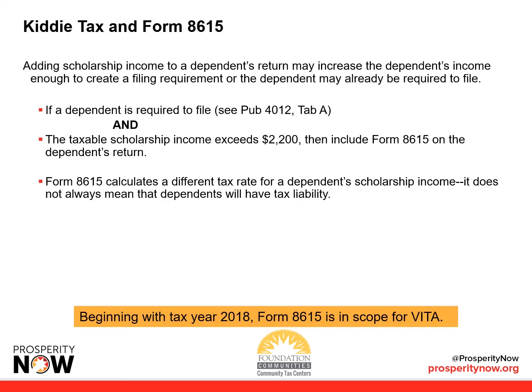For the Kiddie Tax and Form 8615, adding scholarship income to a dependent's return may increase the dependent's income enough to create a filing requirement, or the dependent may already be required to file. If a dependent is required to file and the taxable scholarship income exceeds $2,200, then include Form 8615 on the dependent's return. Form 8615 calculates a different tax rate for dependent scholarship income and does not always mean the dependents will have a tax liability. Beginning with tax year 2018, Form 8615 is now in scope for VITA.